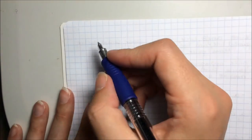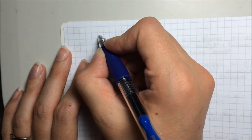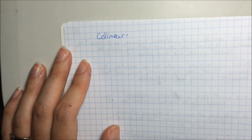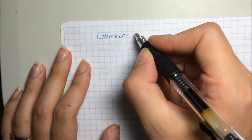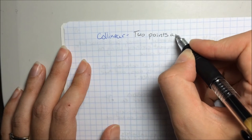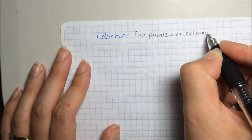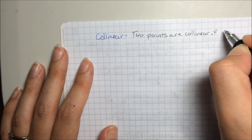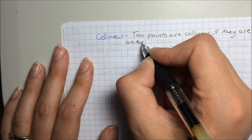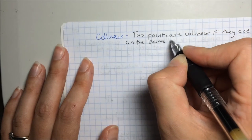And add two more definitions and an important idea. So, collinear. Two points are collinear if they are on the same line.